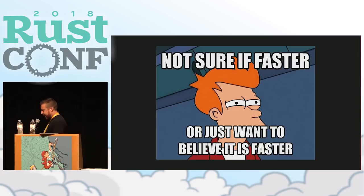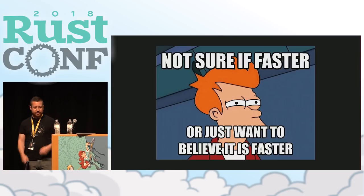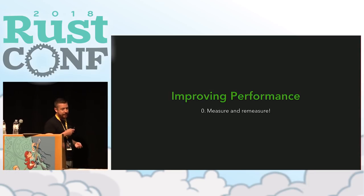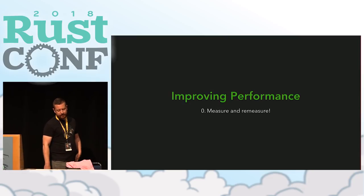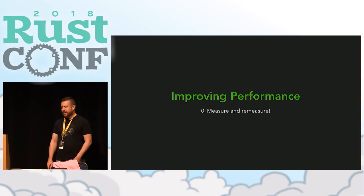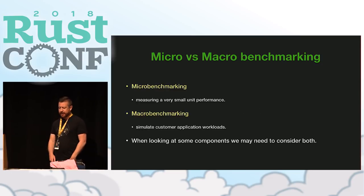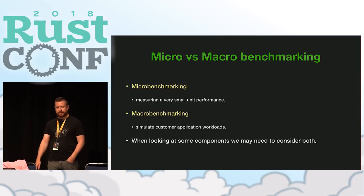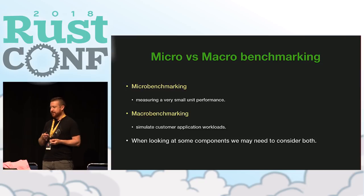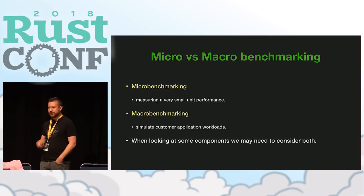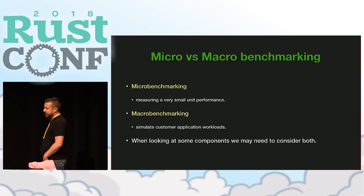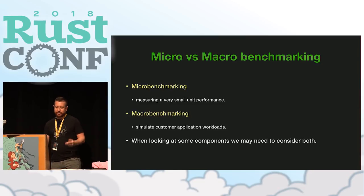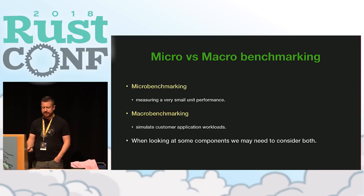To really understand the performance of a system, the first thing we need to do is be able to measure it. The idea is so that you can understand whether you're making positive or negative impacts to your library. There are a couple of terminologies you've probably heard: micro and macro benchmarking. Micro benchmarking is where you're measuring a very small unit of performance, and macro benchmarking is where you're trying to simulate customer application workloads. When looking at libraries, we may need to consider both.